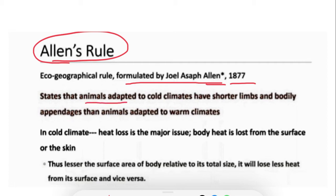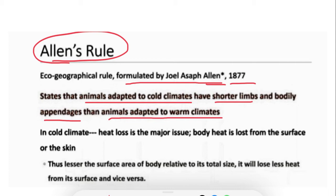Allen's Rule states that animals adapted to cold climates — that is, endothermic animals — have shorter limbs and bodily appendages, meaning they have a small nose, small ears, and small tails, compared to animals that are adapted to warm climates. This rule is an extension of Bergmann's Rule.